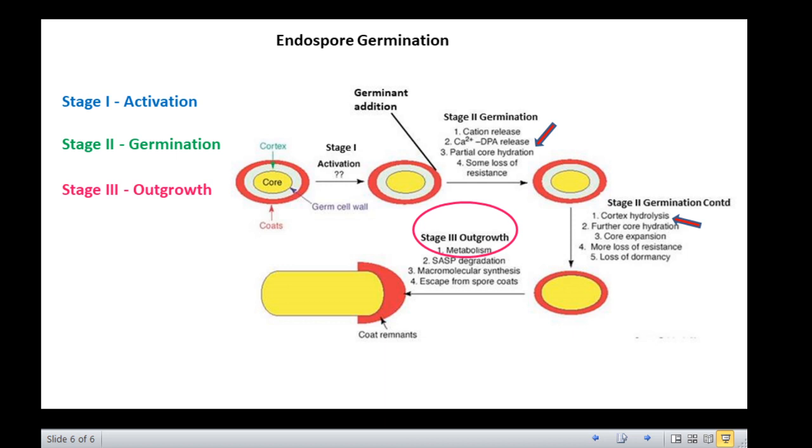The third and final stage is outgrowth, which occurs when the nutrients required for growth are present.